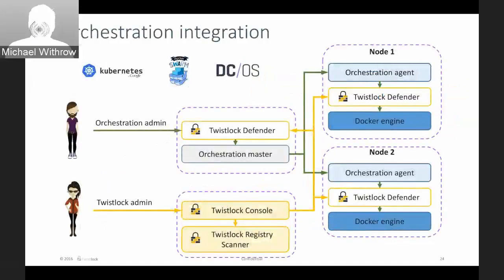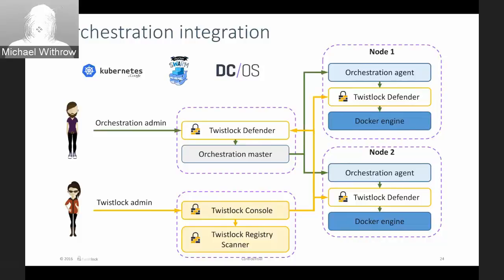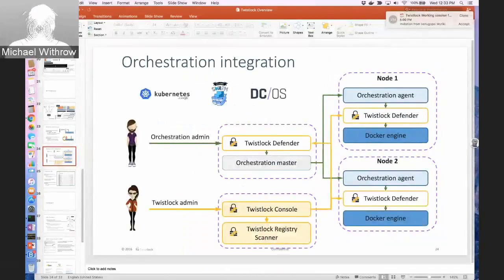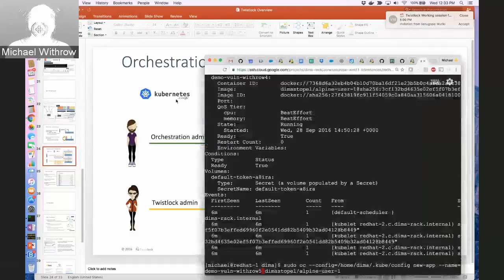In summary: you have your orchestration manager and Docker engine with the orchestration agent. We integrate the defenders into that topology. If you're using access control you'd deploy to the master, but for vulnerability management, compliance, and runtime defense you only need defenders on the slave nodes to provide vulnerability and runtime state of containers in that topology. Before the demo, I'll pause for any questions.